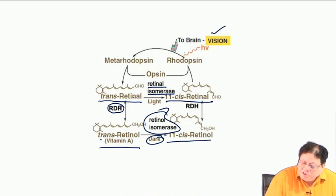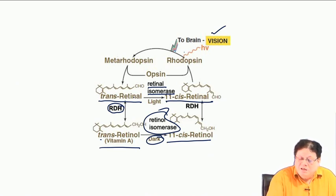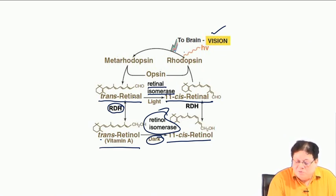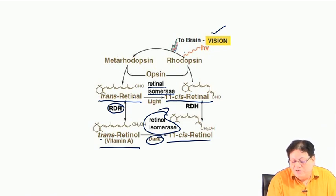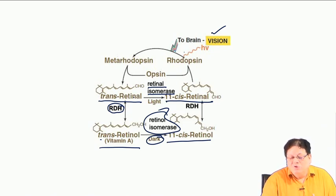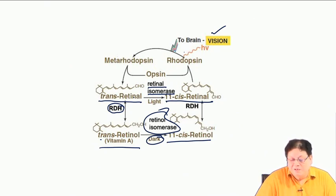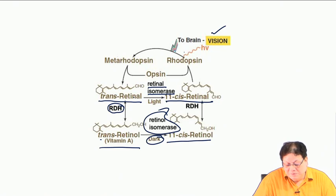What happens to the trans form? It has to be converted back — either by retinal isomerase, or it can be reduced to trans retinol, then to 11-cis retinol, and then to the aldehyde. That is the simplified biochemistry of vision.